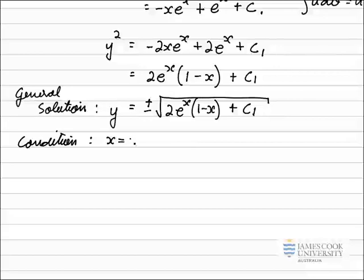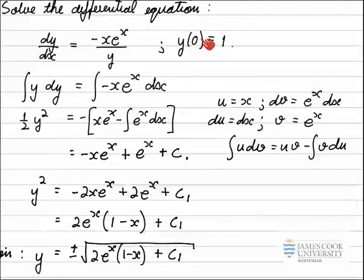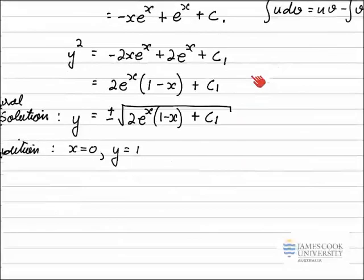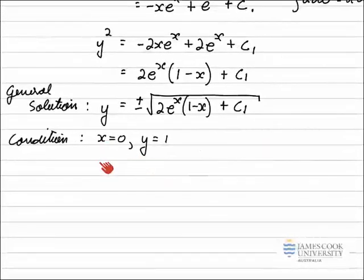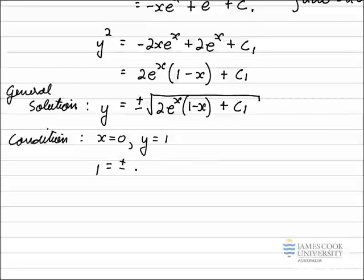The condition says when x is equal to 0, y is equal to 1. Remembering that the solution is y as a function of x. So this says x equals 0, y will equal the right-hand side, which is 1. So substituting those values into the general solution will give me that 1 is equal to the plus or minus square root of 2 times e to the power of 0 is just 1, so it's 2 times 1. 2 times 1 multiplied by 1 minus 0 is just another 1 in there, plus the arbitrary constant c1.